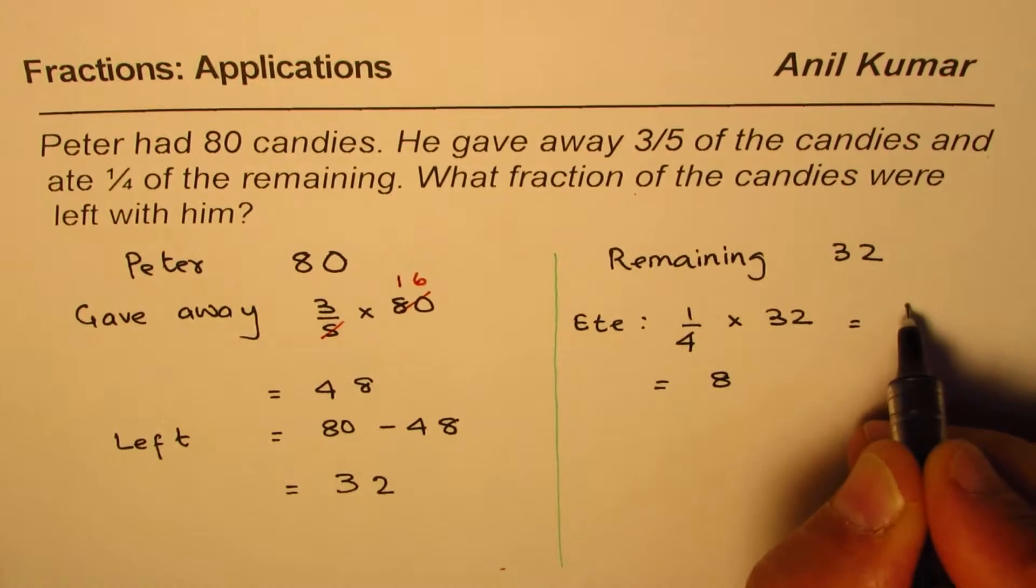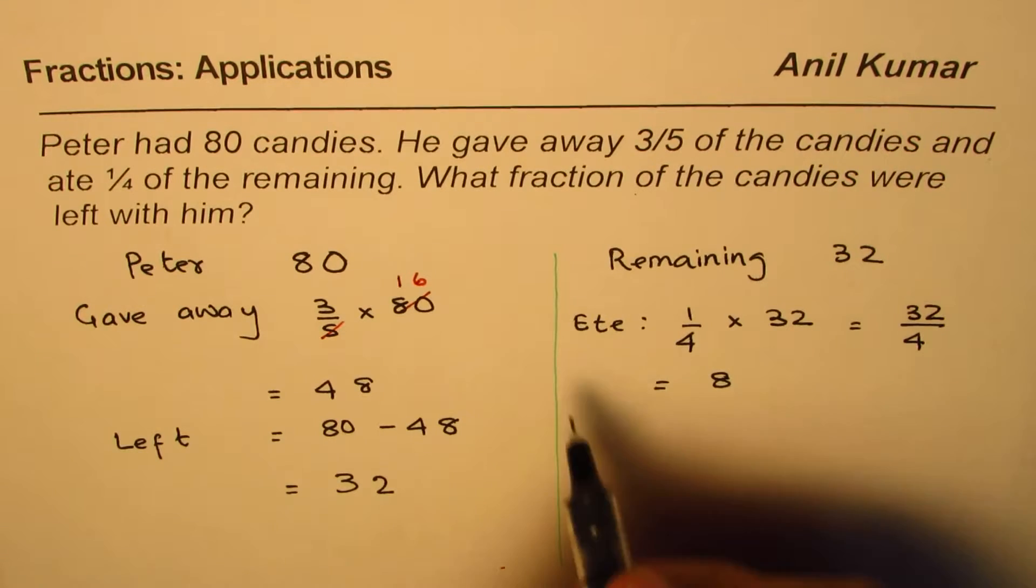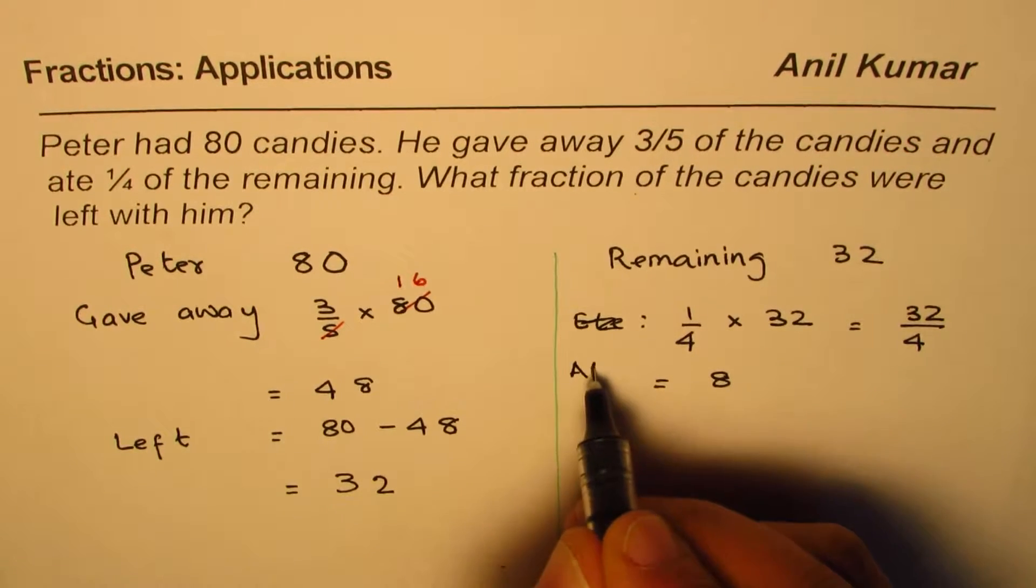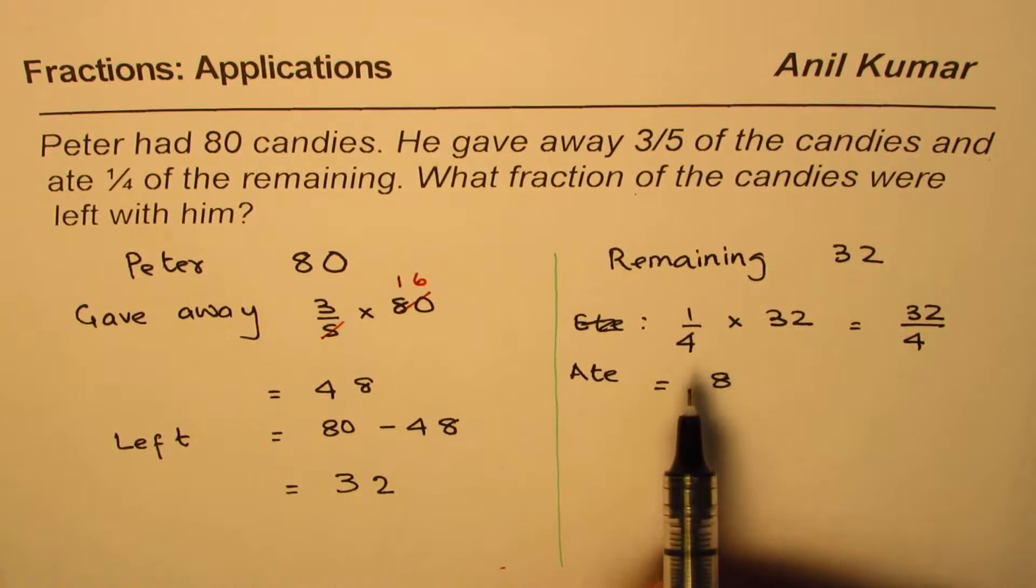So when you divide 32 by 4, it's the same thing as multiplying by 1/4, you get the number 8. That is 32 divided by 4, which is 8. So he ate 8 candies.